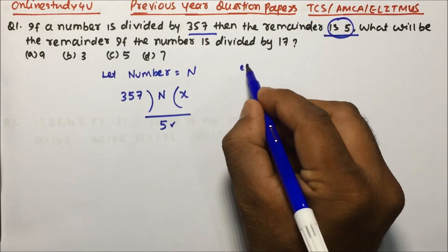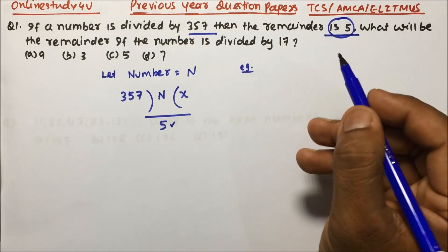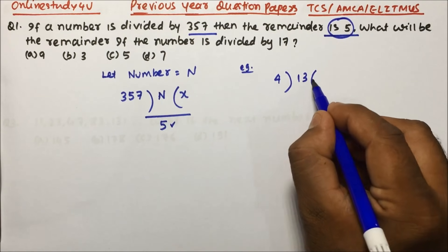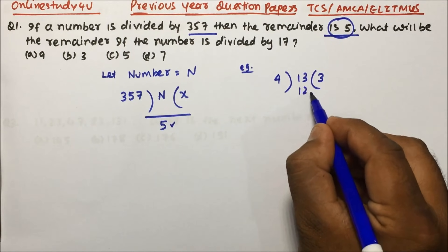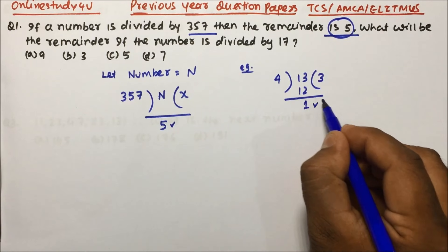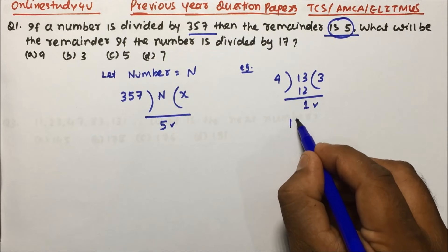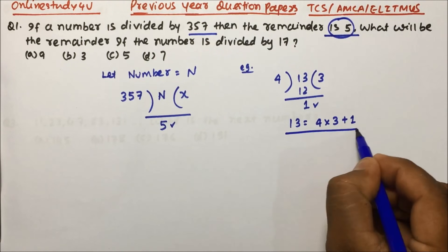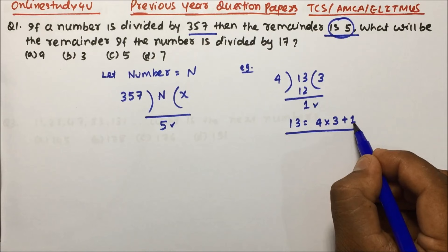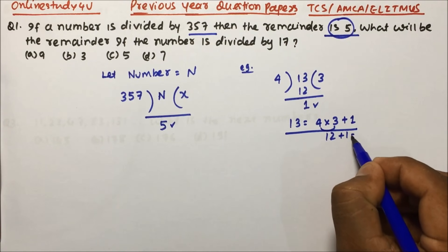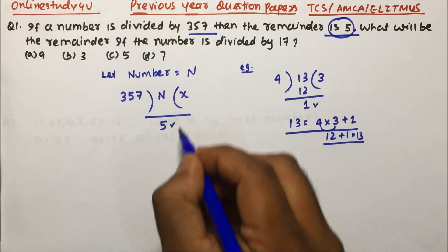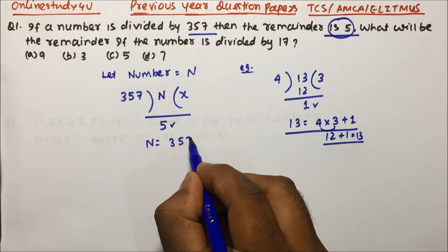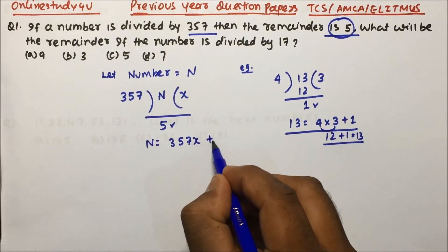I'll take a simple example so you understand easily. Suppose 13 divided by 4 goes 3 times: 3 times 4 is 12, and 13 minus 12 is 1. So we write 13 = 4 × 3 + 1. Similarly, n = 357 × x + 5.